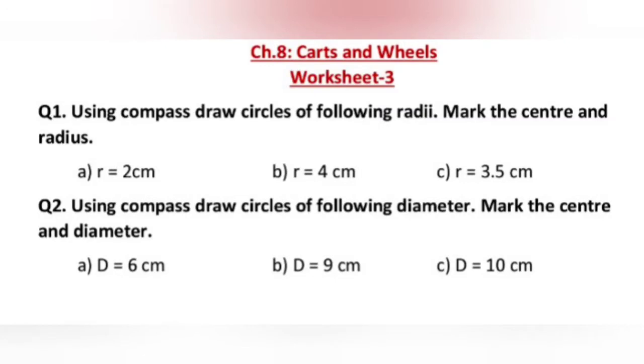Now, in question number 2, the diameter must be given to you and you have to draw a circle by using compass. So, if diameter is given to you, first of all, you have to find the radius out of it. It's easy to find the radius, right? Radius is equal to diameter by 2. So, use this formula and find out the radius first. And then, use the same method to draw a circle.